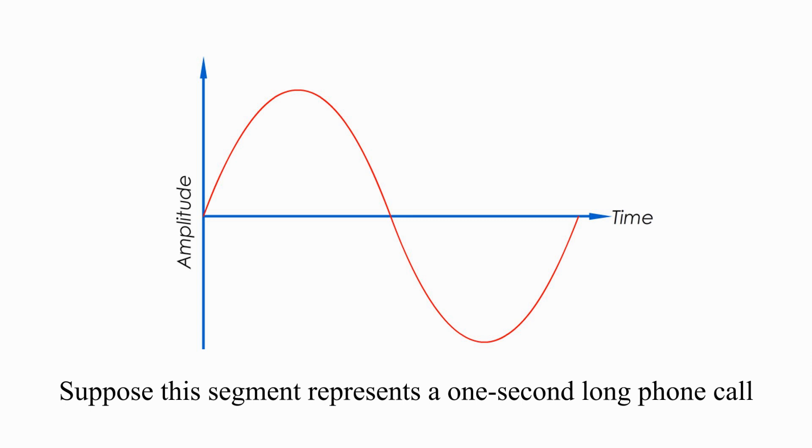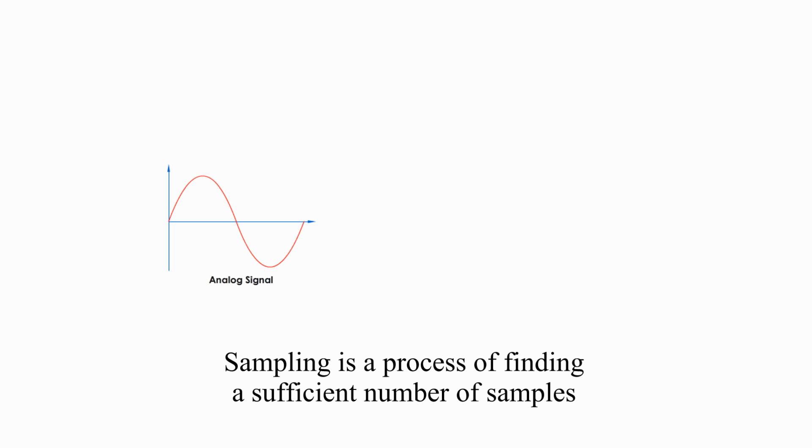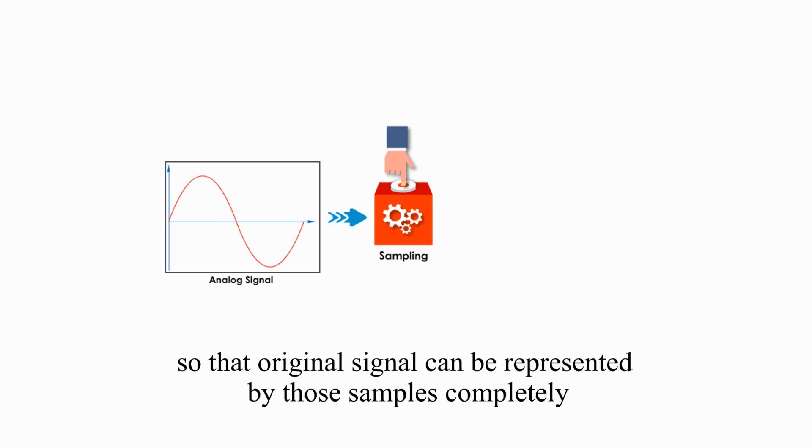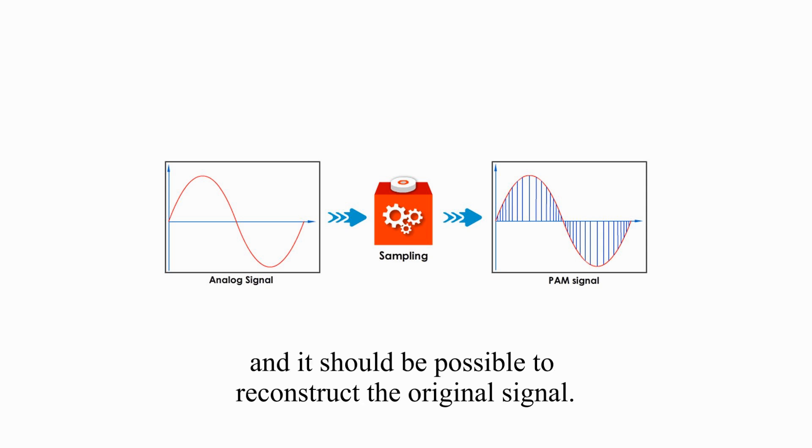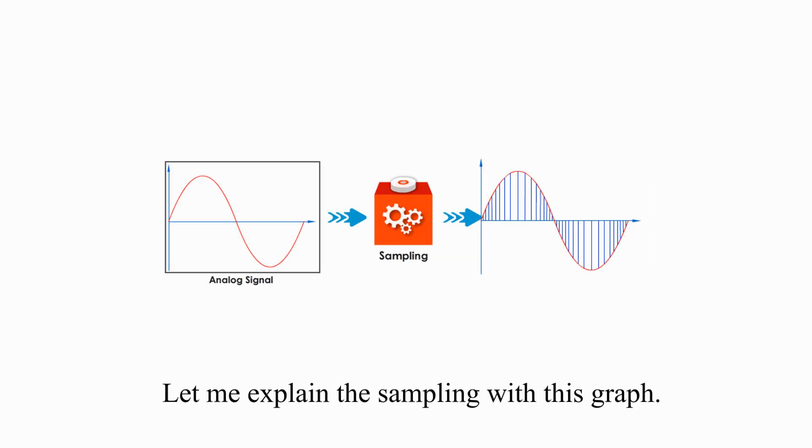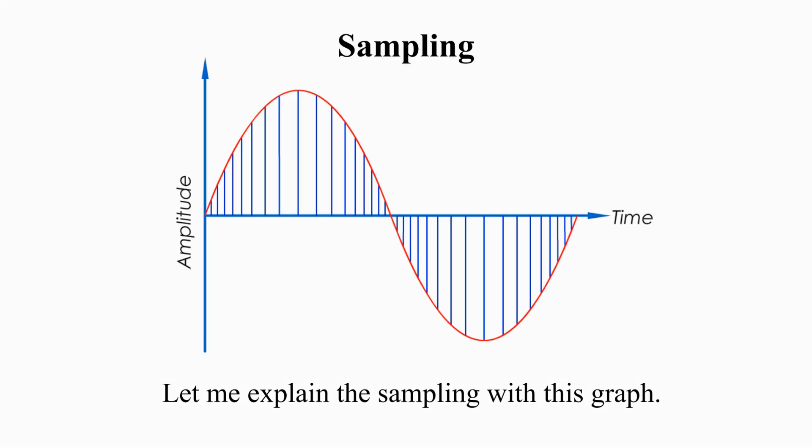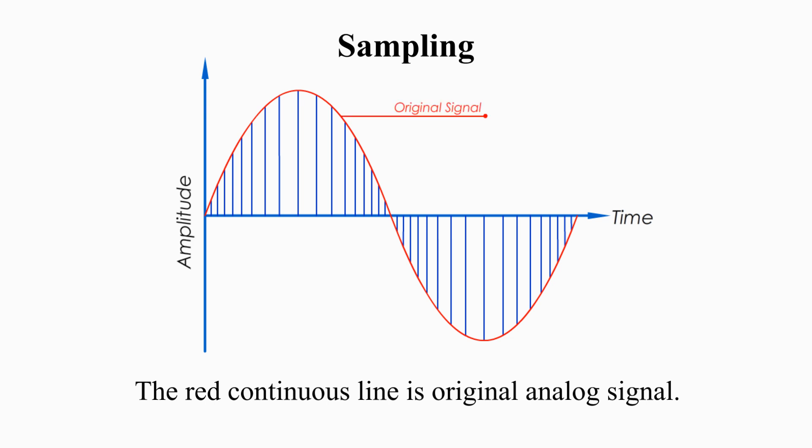Suppose this segment represents a one-second-long telephone call. Sampling is a process of finding a sufficient number of samples so that the original signal can be represented by those samples completely, and it should be possible to reconstruct the original signal. Let me explain the sampling with this graph.